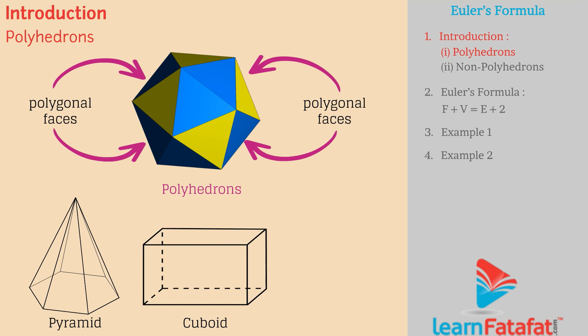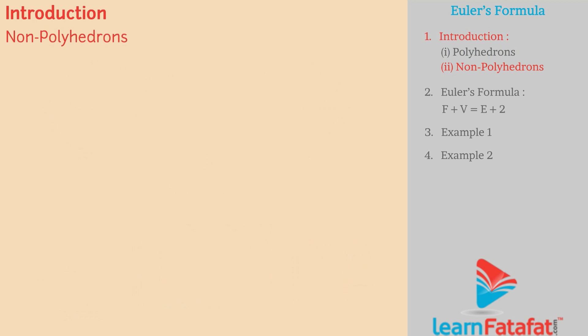Cuboid. Non-polyhedrons: Those figures which are made up of curved surfaces and polygonal faces are non-polyhedrons. Examples: Cylinder, Cone, Sphere.